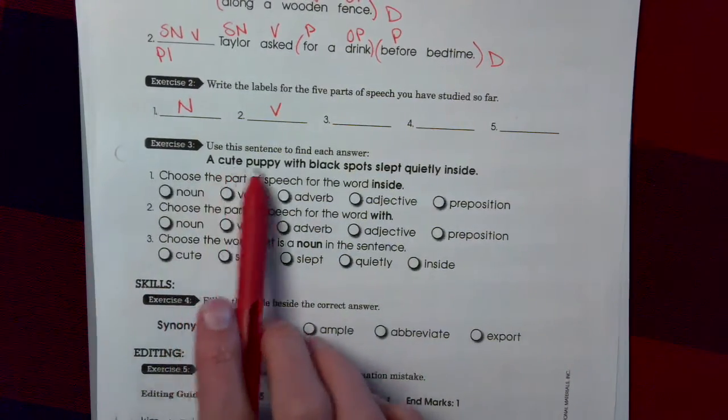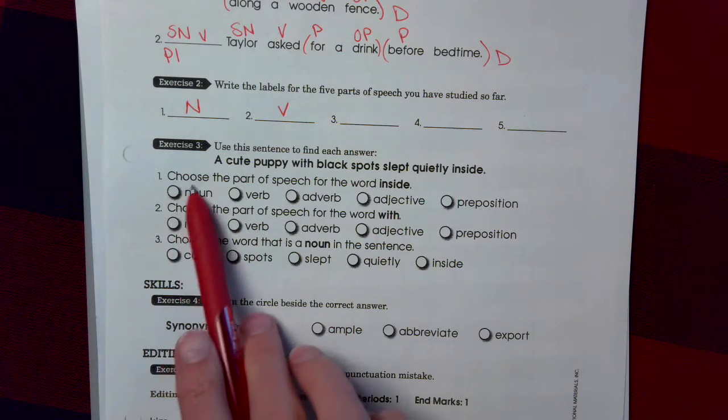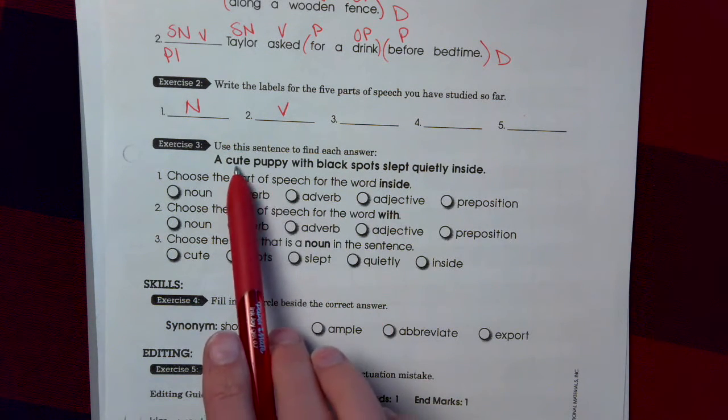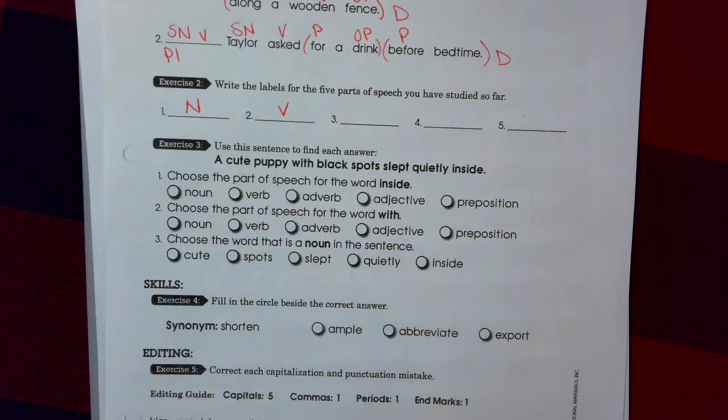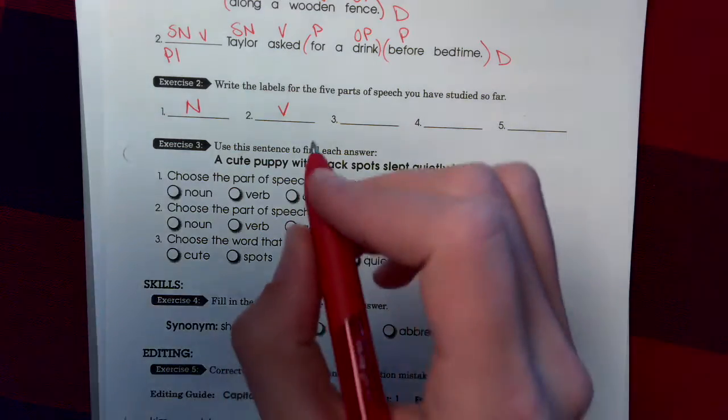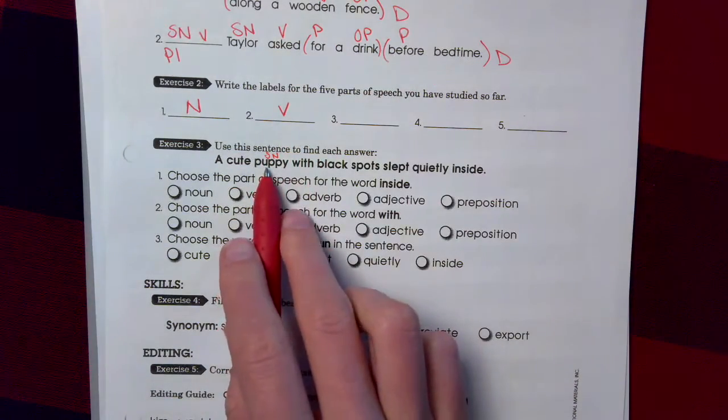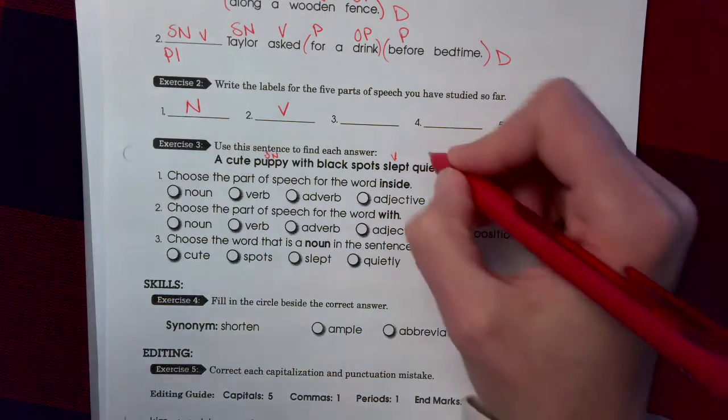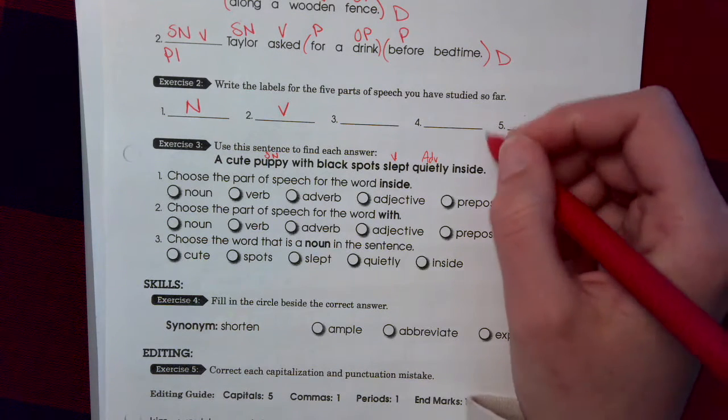Exercise 3. A cute puppy with black spots slept quietly inside. Choose the part of speech for the word inside. A cute puppy with black spots slept quietly inside. What slept quietly inside? Puppy. Subject noun. What is being said about puppy? Puppy slept. Verb. Slept how? Quietly. Adverb. Slept where? Inside.